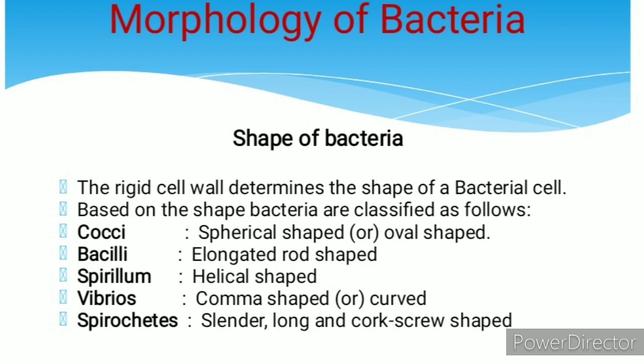Comma-shaped or curved-shape bacteria are called vibrio. Slender, long, and corkscrew-shaped bacteria are called spirochetes.